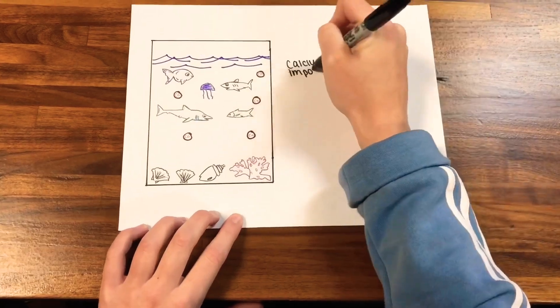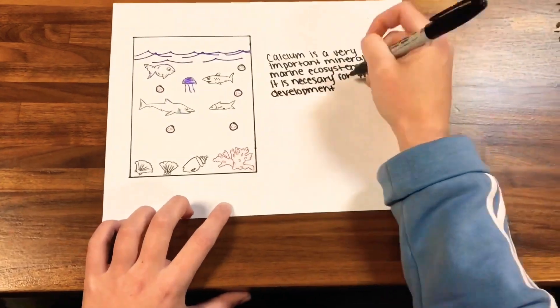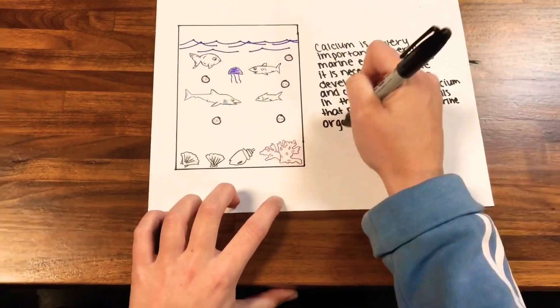Calcium is a very important mineral for marine ecosystems as it is necessary for the development of shells and coral. Without calcium in the ocean, the shells that protect many marine organisms would develop to be brittle and fragile.